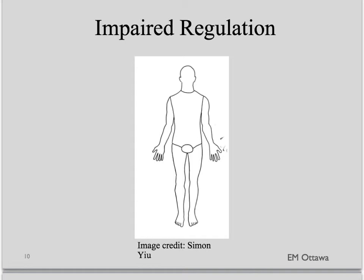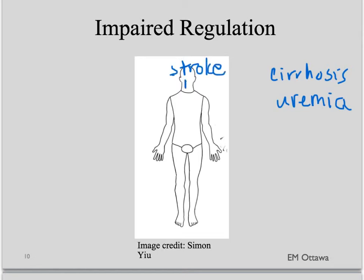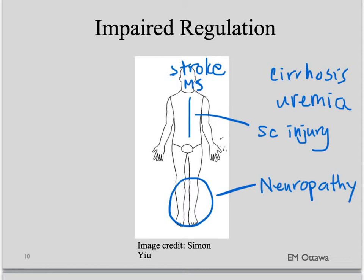Third, impaired thermostat or impaired thermoregulation. In the body, this can be either central or peripheral. Central causes include metabolic causes such as cirrhosis and uremia. It can also include things like stroke or MS affecting the central nervous system. Peripheral causes include spinal cord injury and peripheral neuropathy. These all cause the body to have impaired thermoregulation.